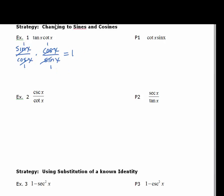Although the instructions didn't say to use this method, there is another method you can use: we could look at the reciprocal identities. Because tangent and cotangent are reciprocals of each other, we could start with tan x, and cotangent is 1 over tan x. Anything times its reciprocal is equal to 1 — the tans cancel out, and you get 1.